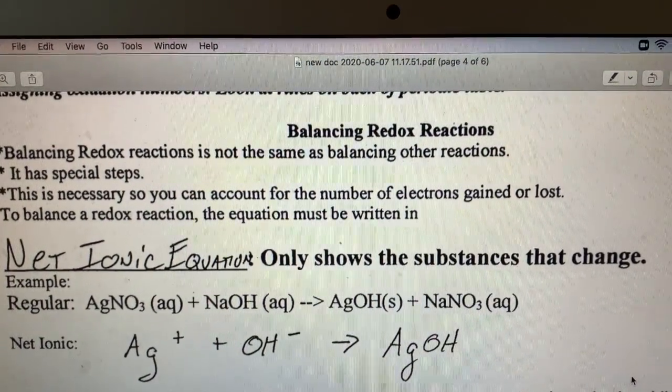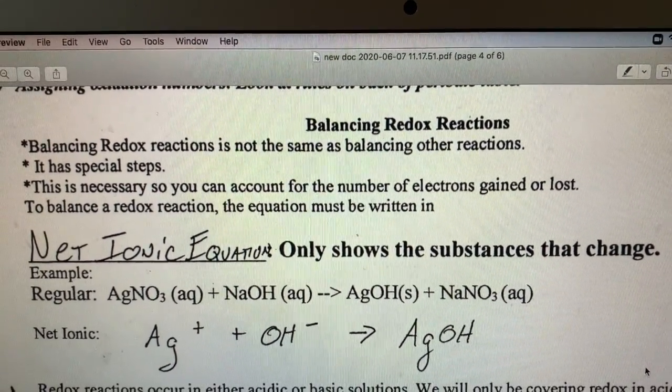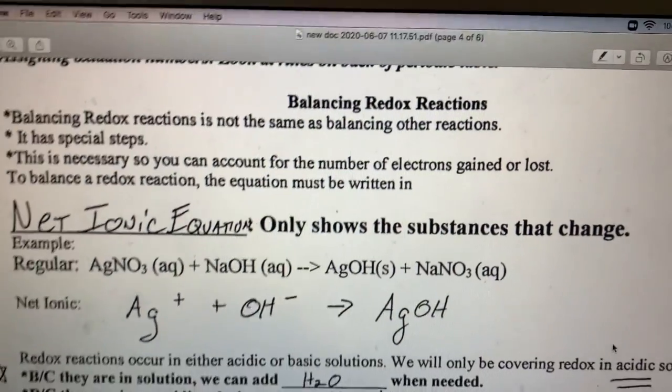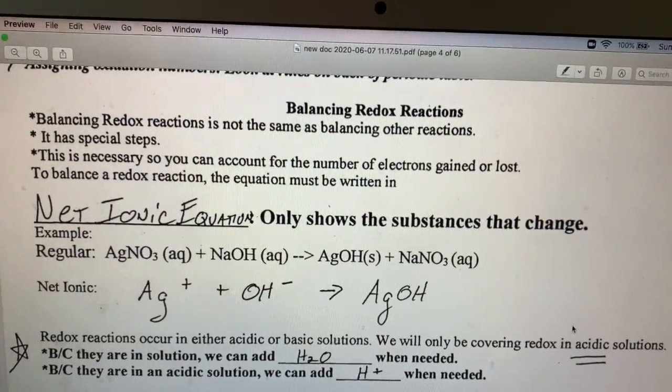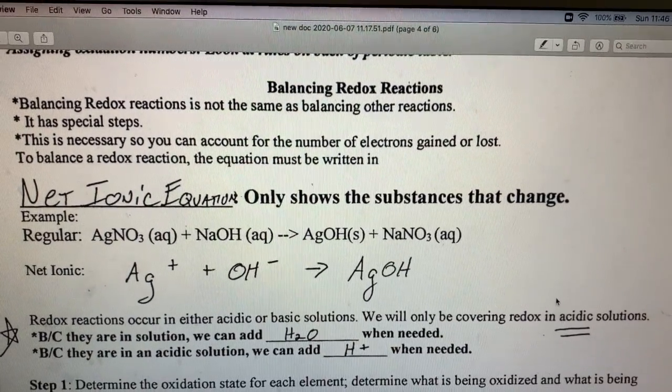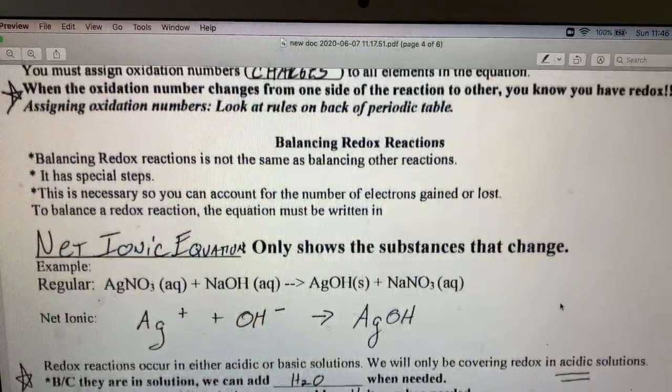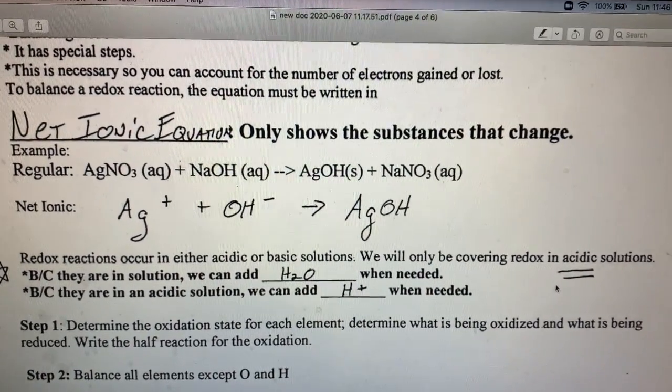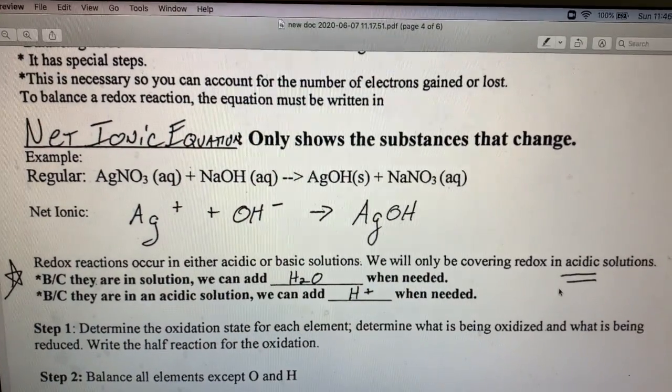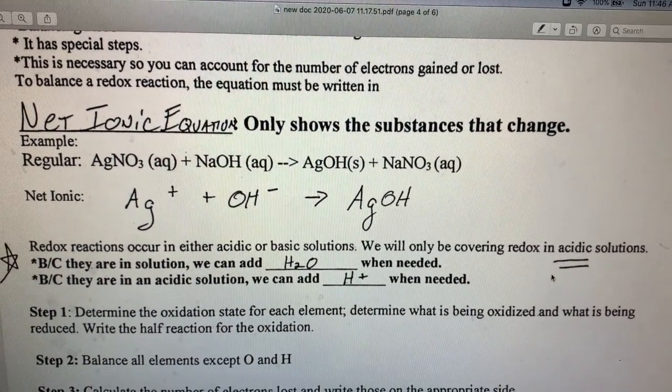First off, in order to properly balance a redox reaction, you do have to have your reaction written in net ionic form, which is what we talked about in our last set of notes. I will sometimes, just to speed things up, give you the reactants and products in net ionic form already, but just know if they're not already in net ionic form, you're going to have to go ahead and write them just like we did in our last set of notes.